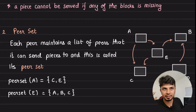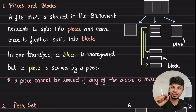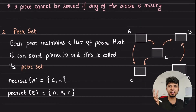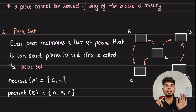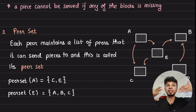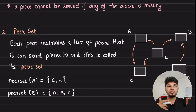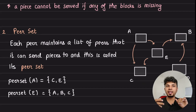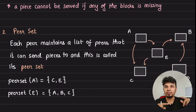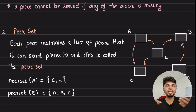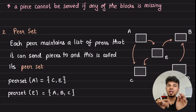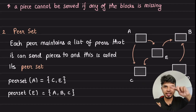Second, the peer set. A peer set is a list of peers that a node can send pieces to or request pieces from. For example, if A wants to download a particular file and I have five nodes A, B, C, D, E — A's peer set as given by the tracker would be C and E. This means if A wants a file, it can get it from C and E, or if A wants to send a file, it could send to C and E. That's the peer set of a particular party in the BitTorrent network.